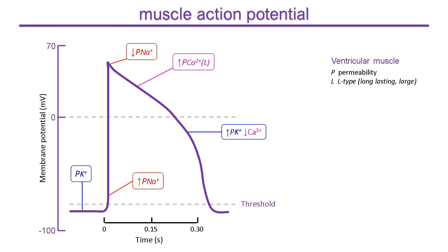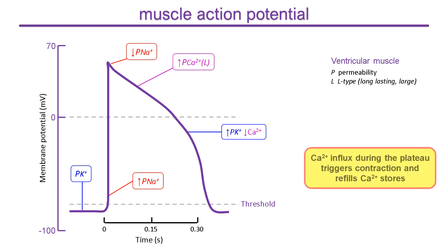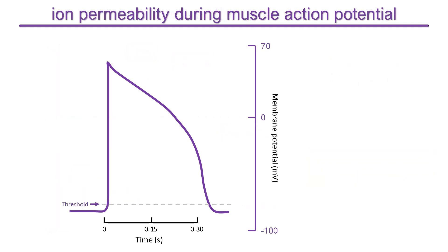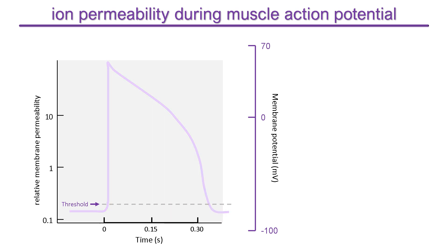Calcium influx during the plateau phase triggers muscle contraction and it refills the intracellular calcium stores used for contraction. Now let's look at the permeability changes directly by superimposing them on the action potential. The y-axis scale is the membrane permeability of an ion measured relative to the potassium permeability at the resting membrane potential.